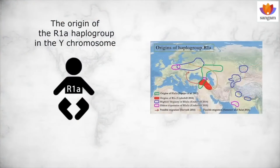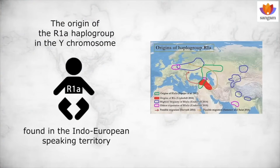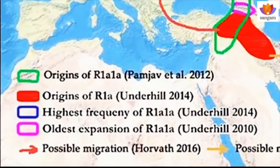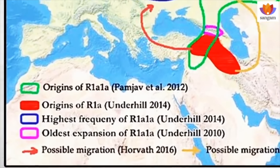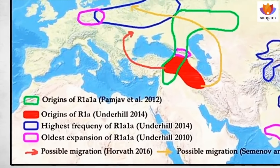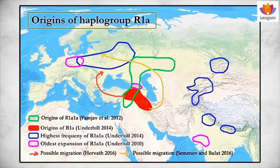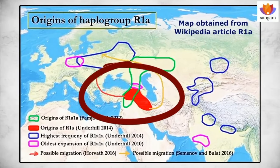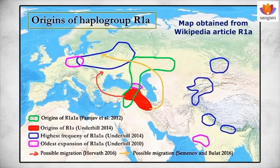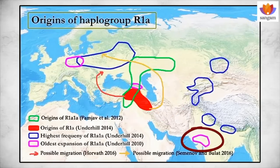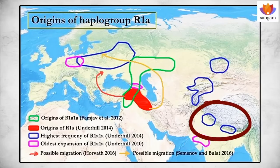Now let us discuss the present view regarding the origin of the R1-alpha haplogroup in Y chromosome, which is exclusively found in the Indo-European speaking territory. Anderil and his team published a number of papers following their periodic studies on the subject. His map on the origin of R1-alpha also suggested that it originated in the Anatolia and European Steppe region. However, the map drawn on the basis of a recent study by the same team confirmed that a pocket of oldest R1-alpha haplogroup is found in western India near Gujarat, and two pockets of high concentration of R1-alpha zone are found in the Himalayan region.